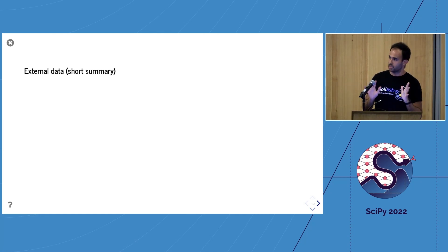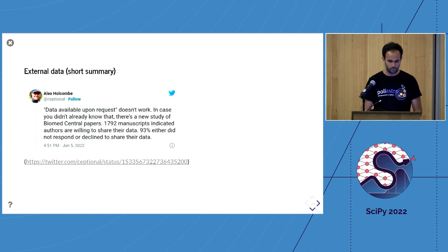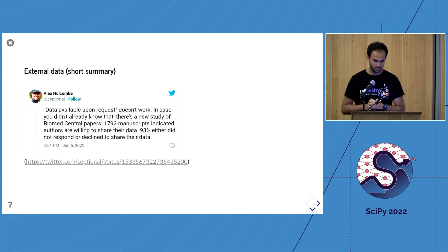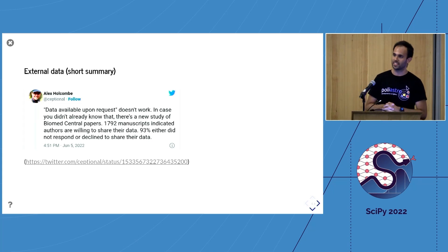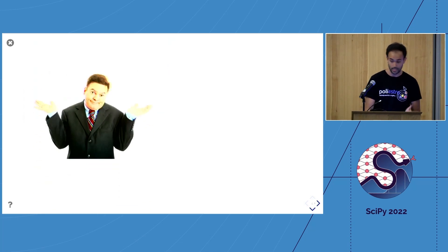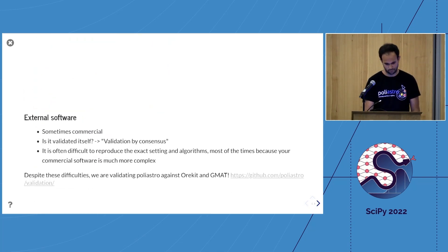Then where do you get this external data from? Have you heard the sentence 'available upon request?' Well, it doesn't work. It doesn't work in the present day, so imagine if you have to go to a manuscript from the '60s or the '80s and try to validate an algorithm from there, which is what we have to do in PolyAstro all the time. This is impossible, and we have struggled with this a lot.